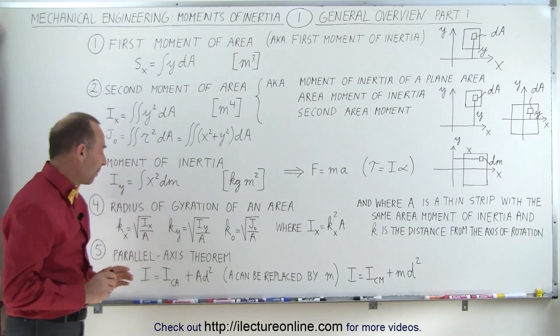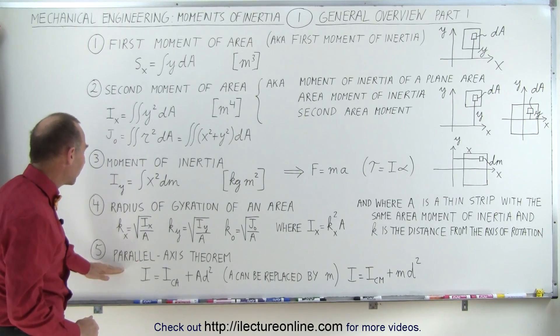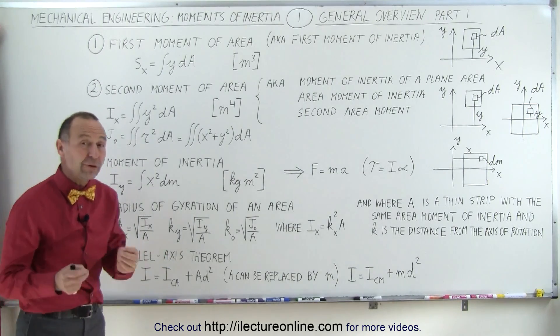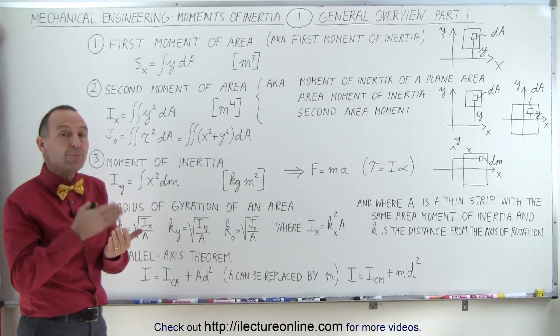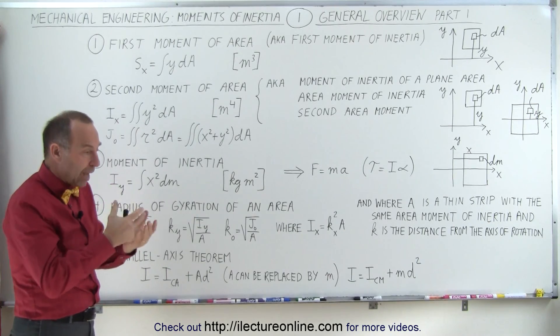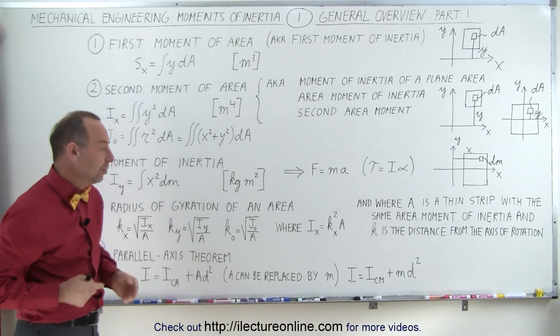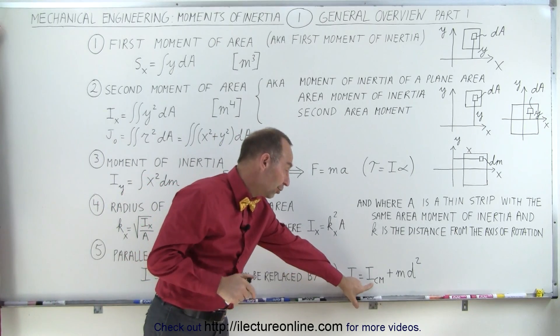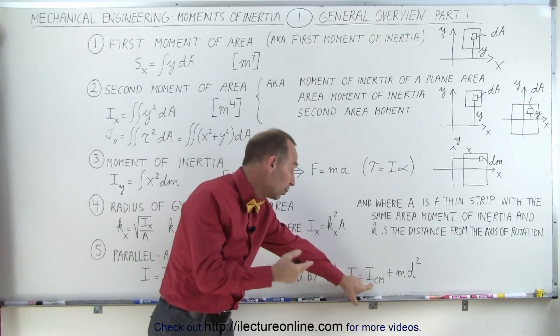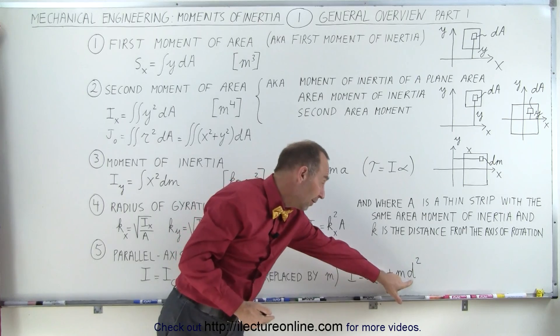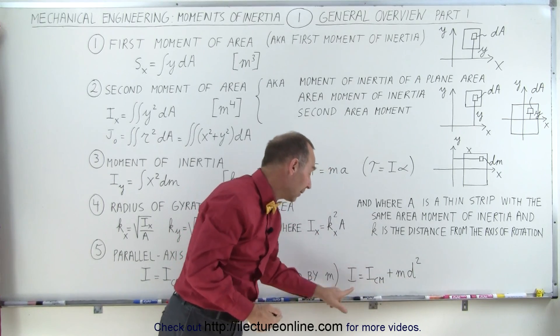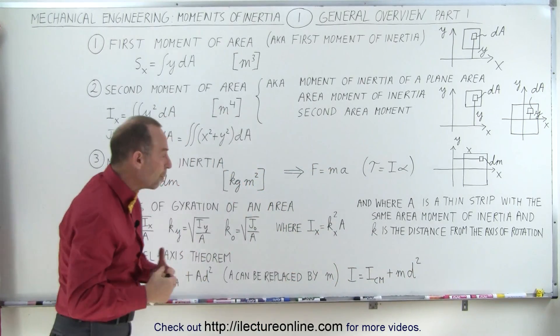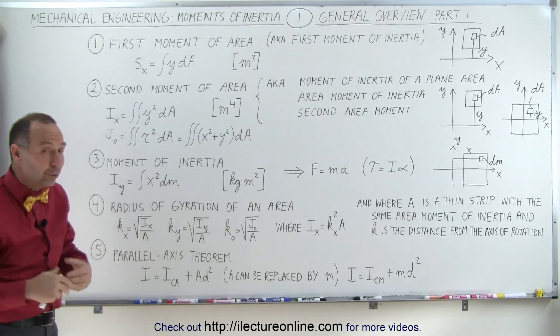The fifth sub-item we're going to talk about is called the parallel axis theorem, which is a very useful theorem that allows us to find the moment of inertia of an object at a different location. For example, we find a moment of inertia at the center of mass, and then we move it to a different location a distance d away, and that allows us then to calculate the new moment of inertia.